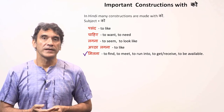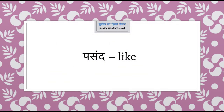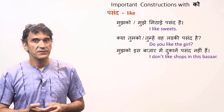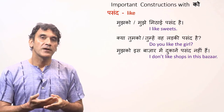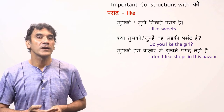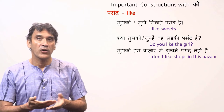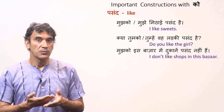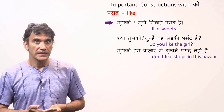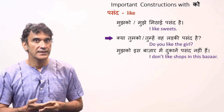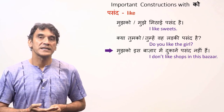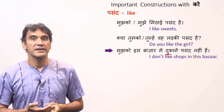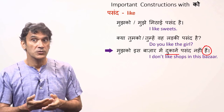Let's take them one by one. Pasand means like. This construction takes the subject with the postposition ko and the verb hona is in the present tense. The verb hona will always be in the third person — that means hai or hain, depending on the number of the things that is liked. In the third sentence, the shops are in plural, so the present tense form of hona is also in plural.